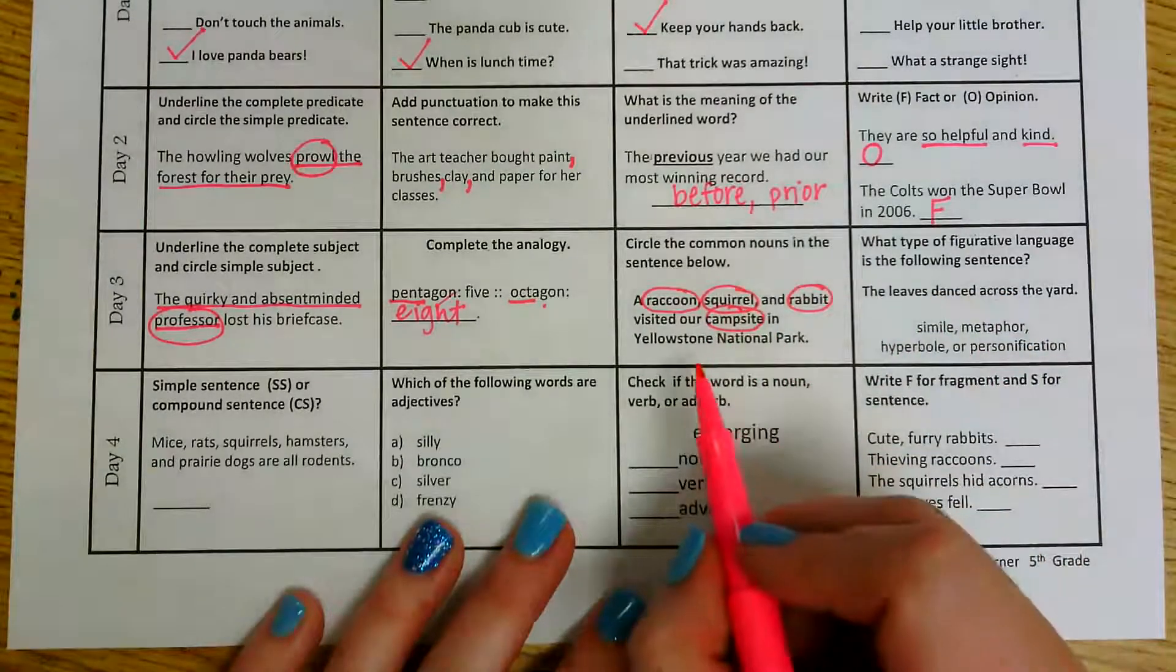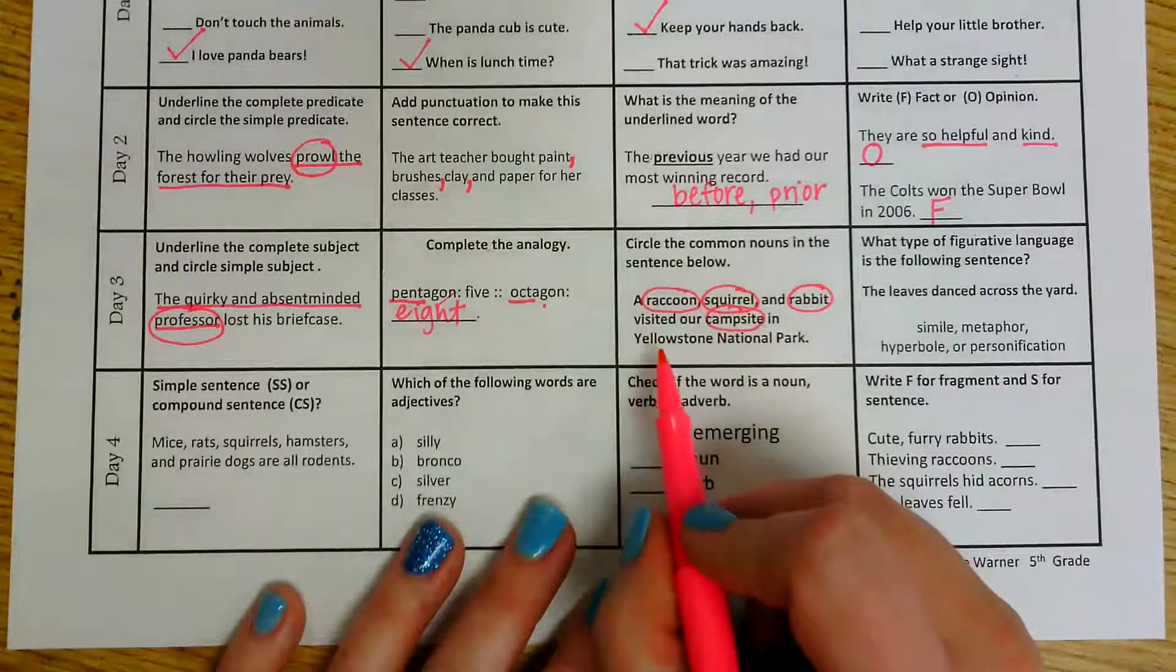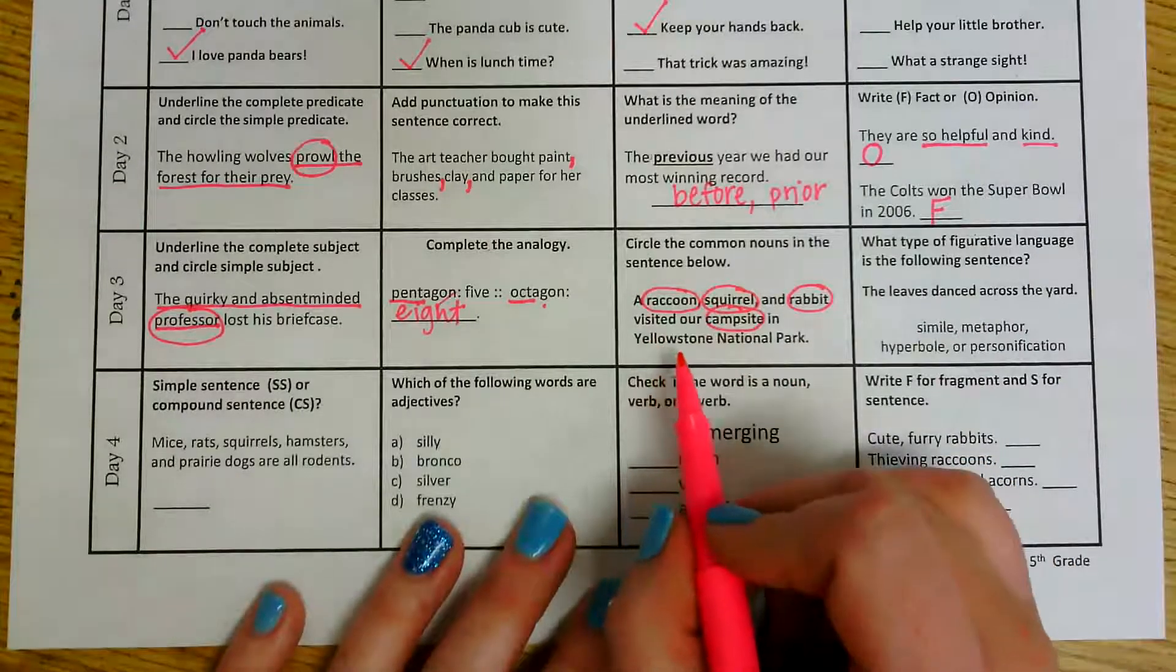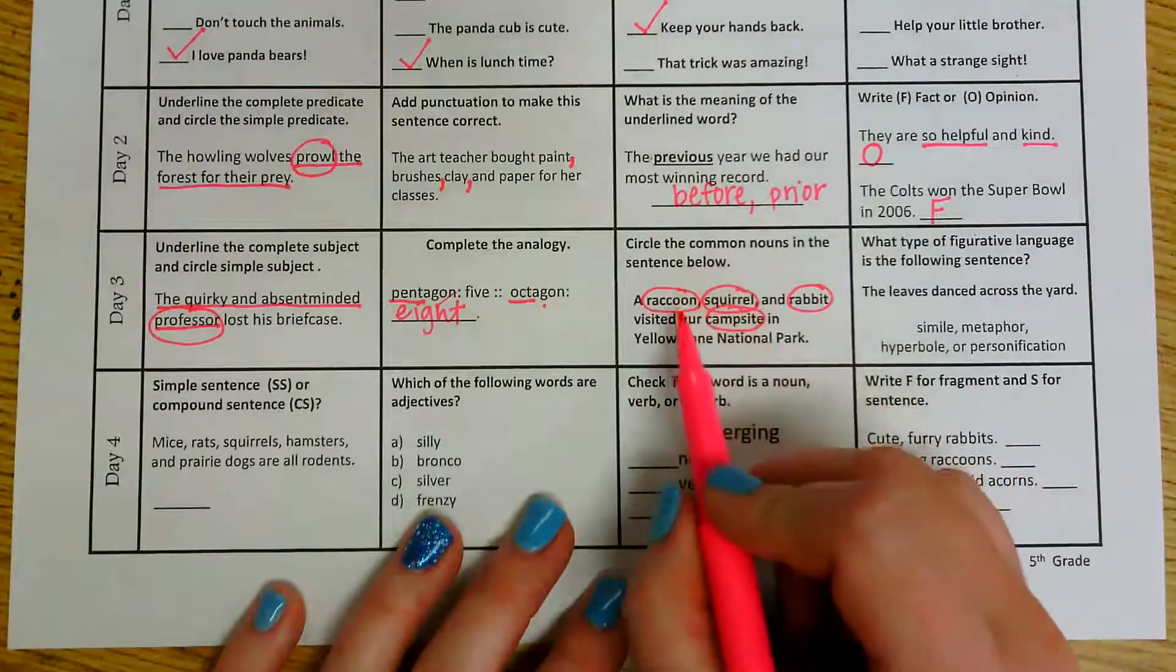Now I would not circle Yellowstone National Park even though that is a place. It is going to be a proper noun because it is the specific name of that place. So we only want the common nouns.